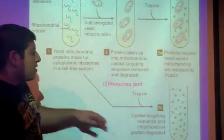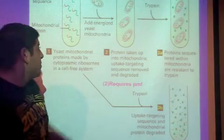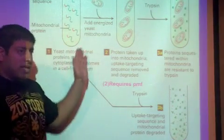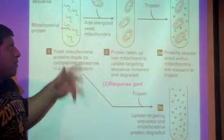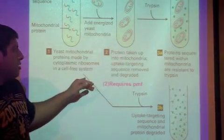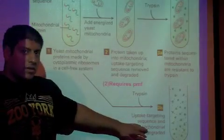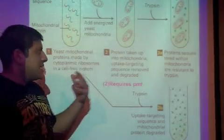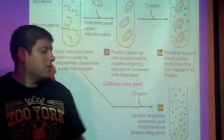Here is the control: with your protein carrying the MTS, before you even add mitochondria you add the trypsin, and obviously the protein is unprotected because it has yet to reach its destination.